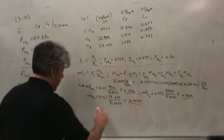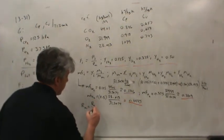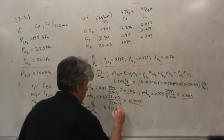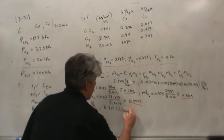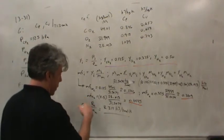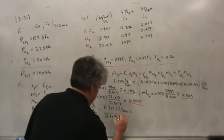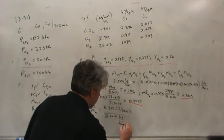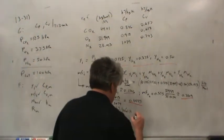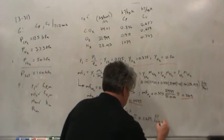The apparent gas constant is pretty easy — just take the universal gas constant and divide by the apparent molecular weight. R_m = 8.314 kJ/(kmol·K) divided by 31.5074 kg/kmol. The kilomoles cancel, giving us kJ/(kg·K), and that comes out to about 0.2639 kJ/(kg·K).